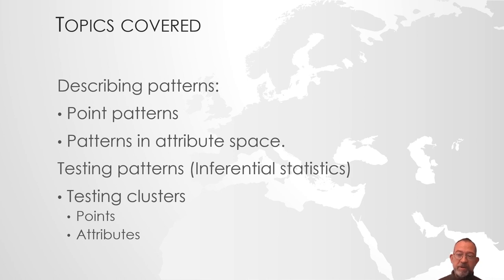So the topics we will be covering in general, patterns. We will be talking about point patterns. And we will talk about patterns of attributes. We will be talking about describing them. And we will be talking about tools for doing inferential statistics where we compare to what we call a null hypothesis. We will say, are they randomly distributed? And how far from randomly distributed are they? Because, as I mentioned, there is not really very many things in society that are randomly distributed.